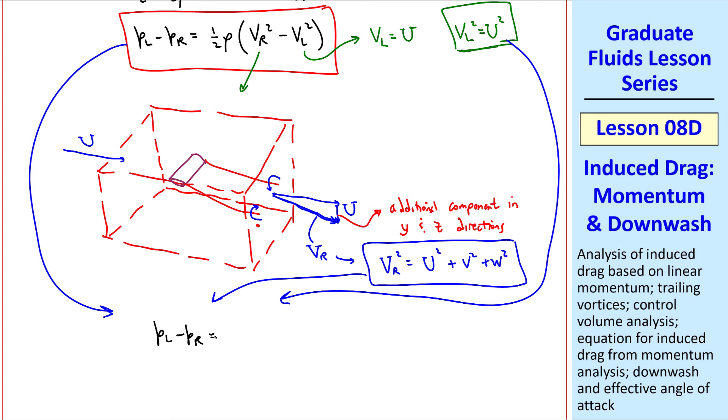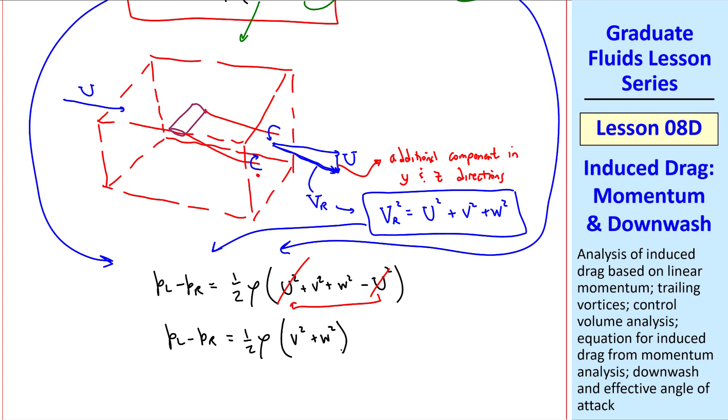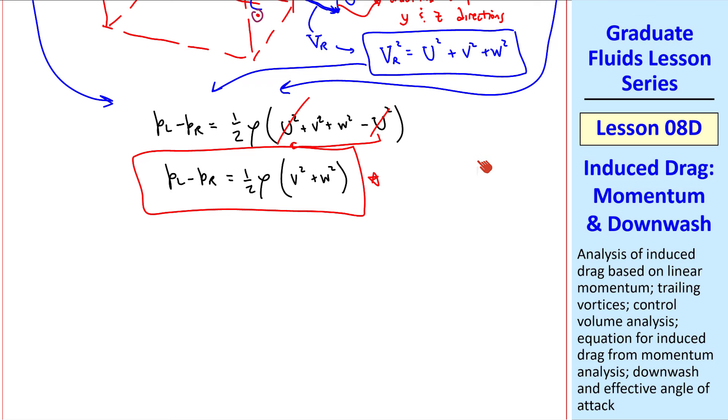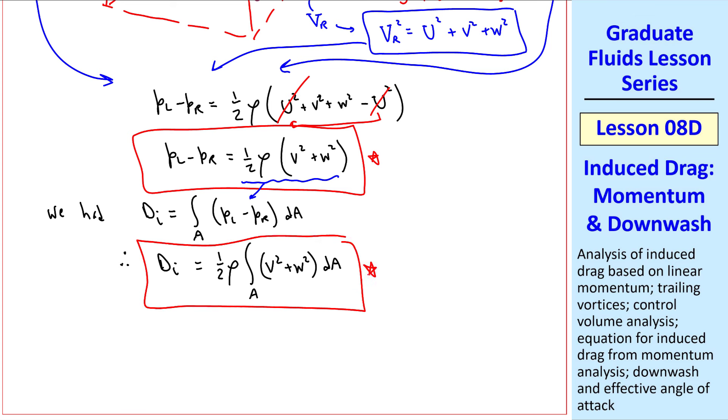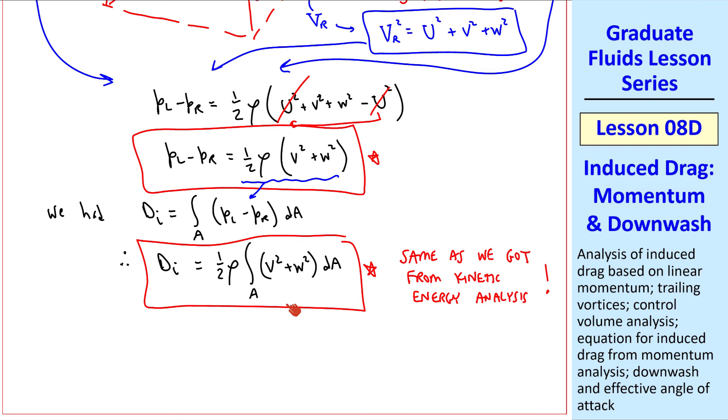Thus our equation for the pressure difference, when we plug in VR squared and VL squared, we get PL minus PR equal 1 half rho U squared plus V squared plus W squared minus U squared, and the U squareds cancel, leaving us with only the V squared plus W squared terms. This is the equation for the pressure difference between any two matching points, for example, this point and this point, on opposite faces of the control volume, the left face and the right face. If we go back to our equation for induced drag, we had DI equal the integral over the area, PL minus PR, dA. Therefore, plugging in this for PL minus PR, we get DI equal 1 half rho integral over area A, V squared plus W squared, dA. Thus we get an equation for induced drag, and what's nice is that this is the same as we got from our kinetic energy analysis. We derive this using linear momentum, but we get the same answer as with kinetic energy, which I think is very cool and makes me happy.